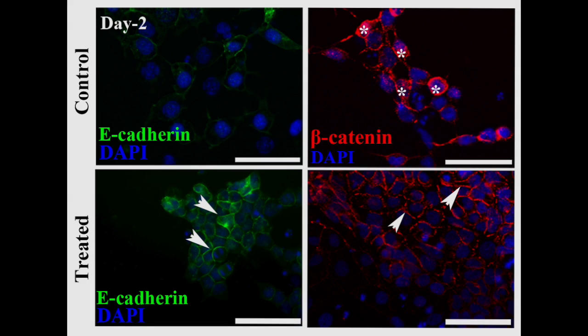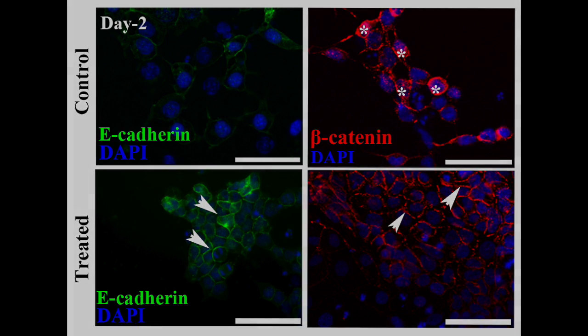Our data also revealed that metformin inhibits WNT signaling, a major signaling pathway active during neural crest formation, via DVL-3 inhibition, which in turn allows a potential down-regulation of E-cadherin repressors like SNAIL, SLUG, and ZEB, thus supporting the persistent expression of E-cadherin.